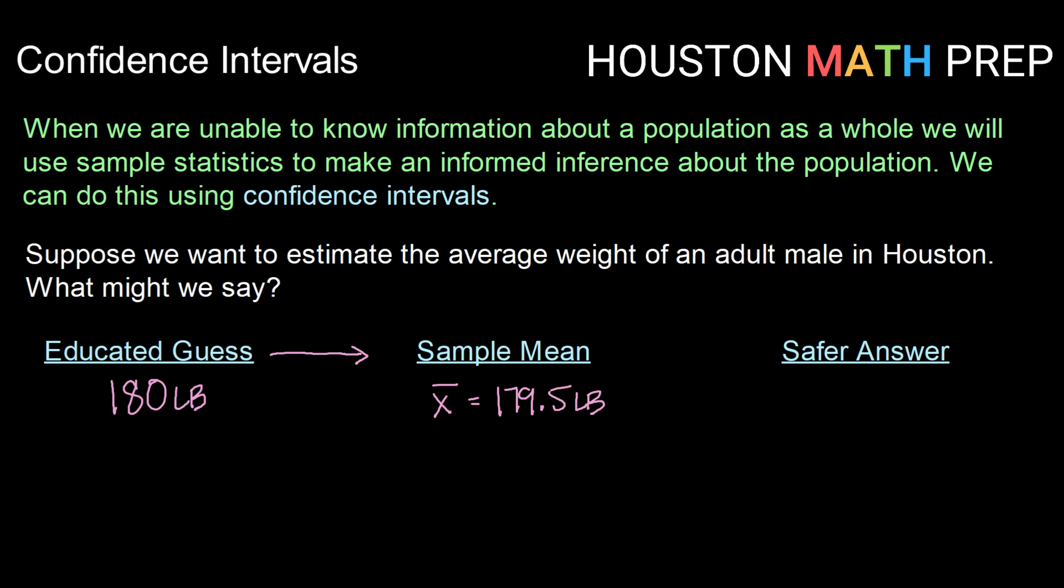So what we can do is actually move even further and give a bit of a safer answer. Rather than giving just one value, we could give a range of values. So we could say, let's take this sample mean or this educated guess, and let's say we think that that's true, give or take about five pounds. So we're going to say that actually we think the average weight of an adult male in Houston is somewhere between 175 to 185 pounds.